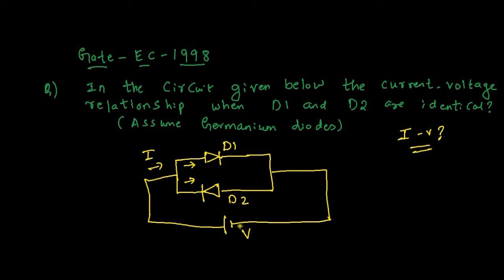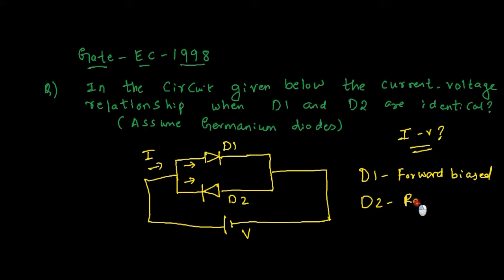We have to assume germanium diodes. There is a voltage source with voltage V and two diodes connected to it. D1's positive terminal is connected to the positive terminal of the source and negative to negative, so D1 is forward biased. D2 is reverse biased. D1 and D2 are in parallel, so the current I will split — some portion goes into D1 and some into D2.